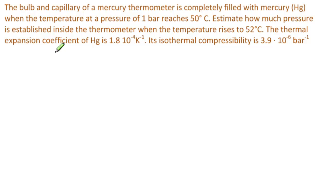The thermal expansion coefficient of mercury is 1.8×10⁻⁴ per Kelvin, and its isothermal compressibility is 3.9×10⁻⁶ per bar.